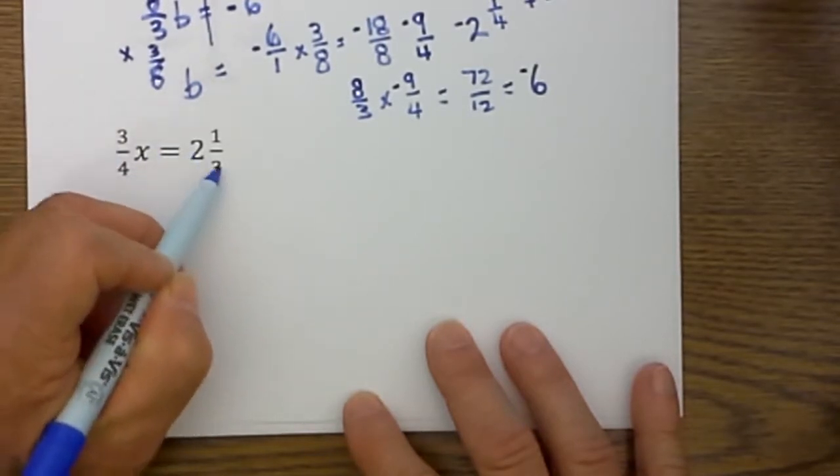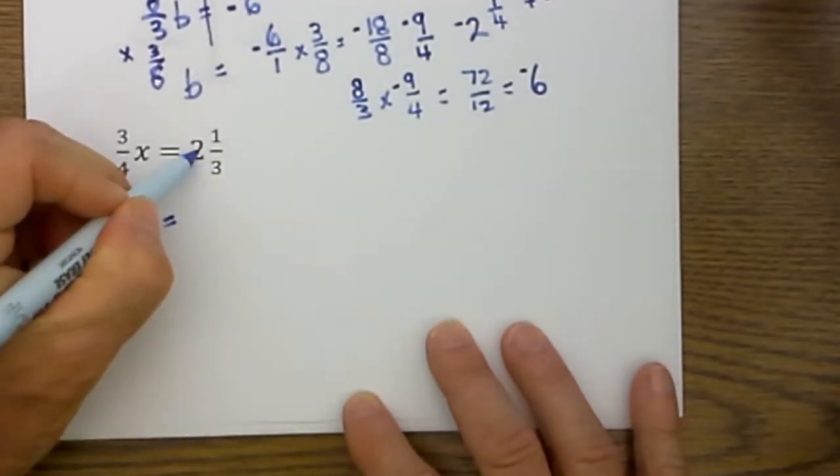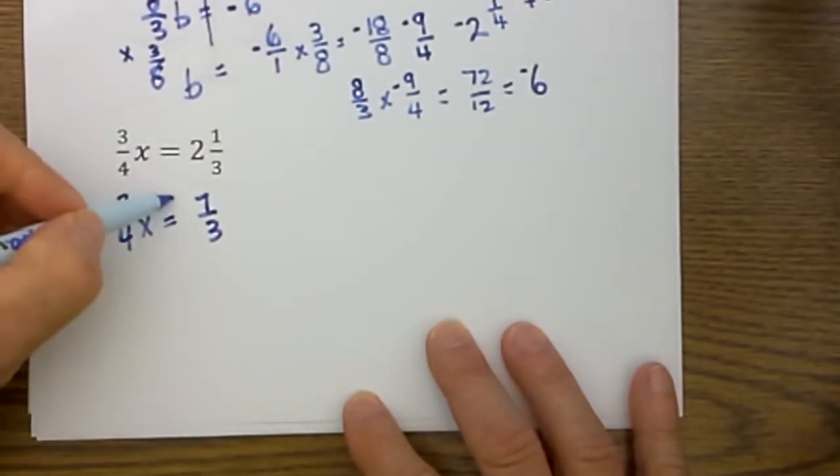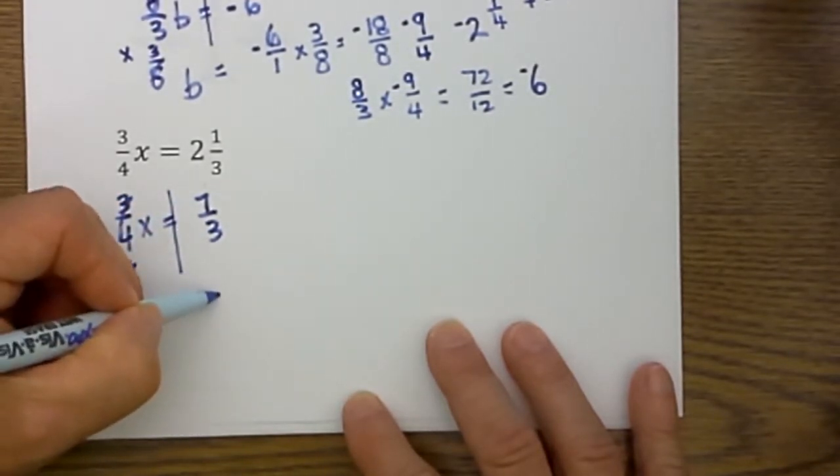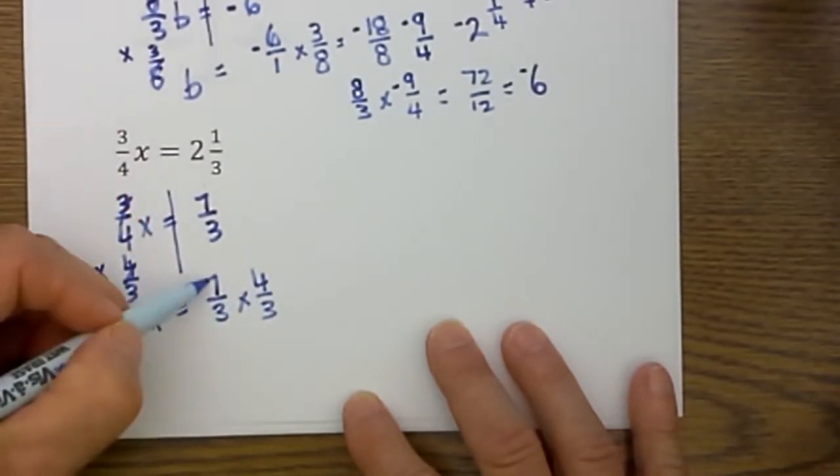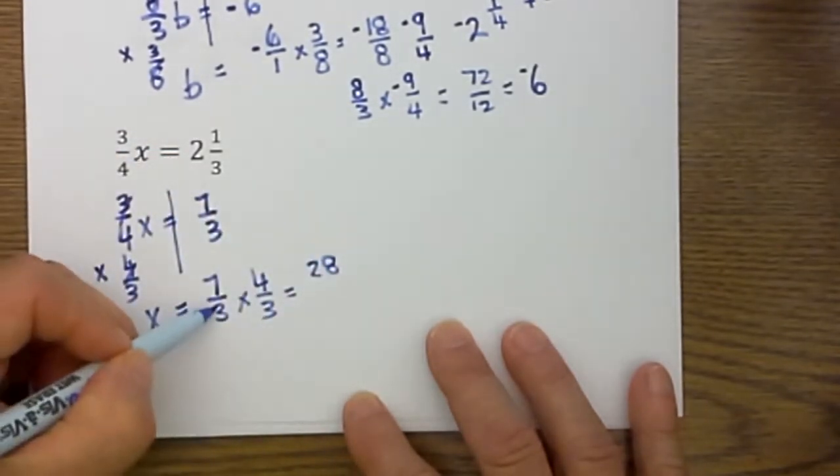Before we get started how do I tackle this? I have a mixed fraction. I will convert it into an improper fraction because it makes it easier. 3 times 2 is 6 plus 1 is 7, so it becomes 7/3. I will separate. I then will get x totally alone by multiplying by its opposite. So I will multiply it by its opposite which is its reciprocal, remember the shortcut, and these cancel. Bring the x down. What I do to one side I must complete on the other.